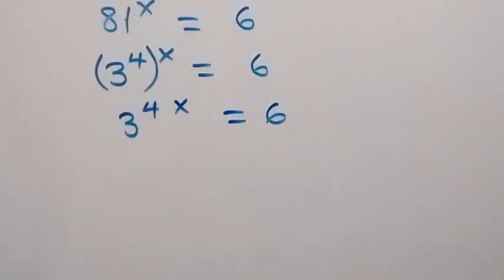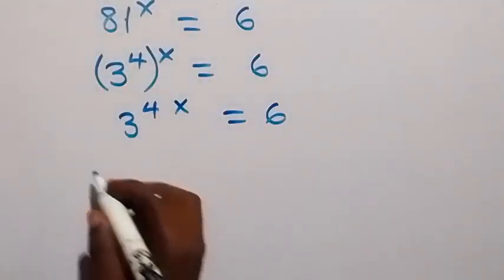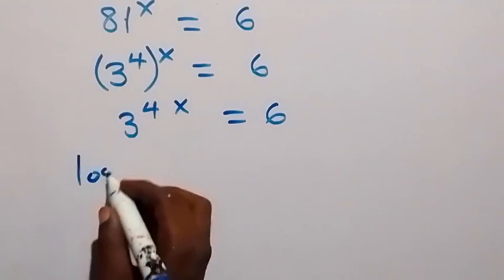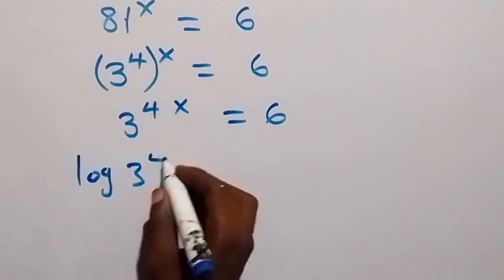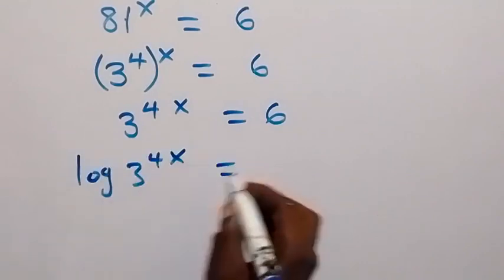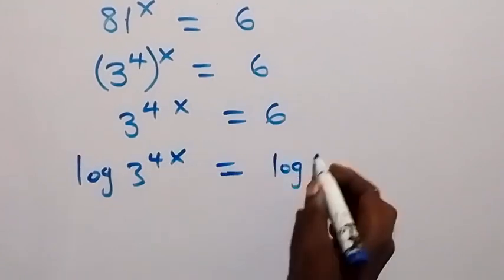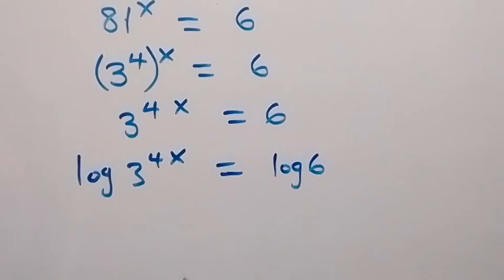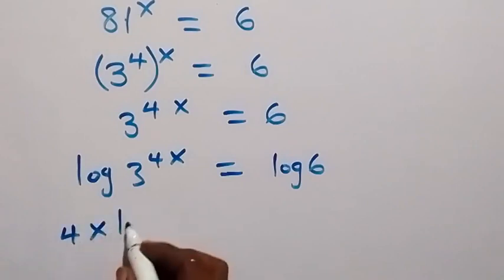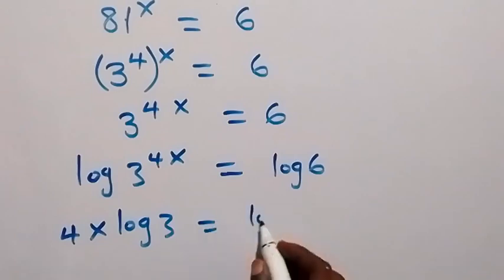Then we take log on both sides, so we have log of 3 raised to power 4x equals log 6. Applying the power rule of logarithms, the power comes to the front, so we have 4x times log 3 equals log 6.